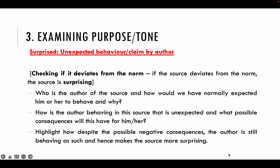If the source deviates from the norm, then the source is surprising. This is where you need to ask yourself: who is the one talking here? Who is the author? Is this how I would expect them to react, to behave usually, and why? If the author is behaving in a source that is unexpected, why is it very surprising to us? What possible consequences will this have for them? This is where you need to highlight how, despite the possible negative consequences, the author is still behaving as such — and hence makes the source surprising.